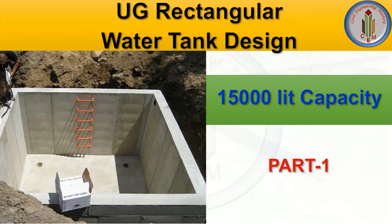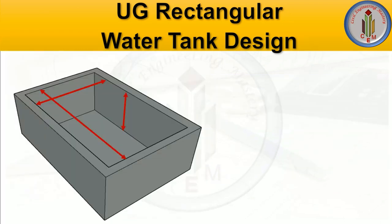Hey friends, welcome back to Civil Engineering Mastery. I have received many queries regarding water tank design, so today we are going to discuss the design of an underground water tank. The capacity of the water tank is 15,000 liters. In this video, let's discuss what are all the basic things we need to consider while designing the underground rectangular water tank.